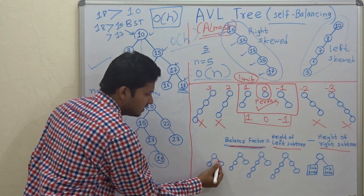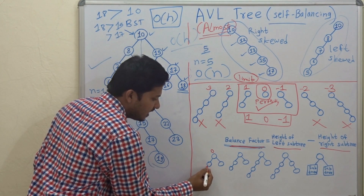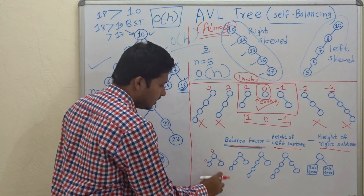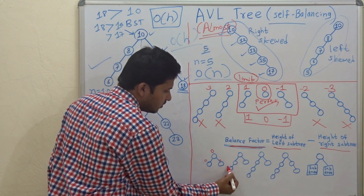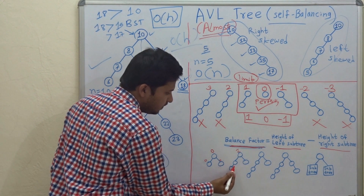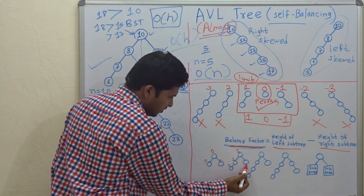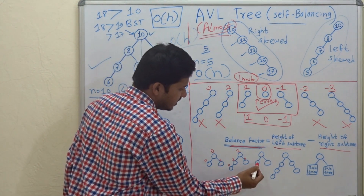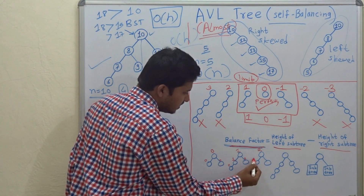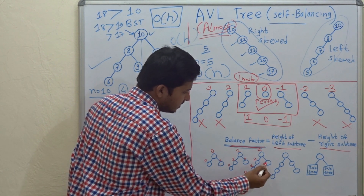Let's see more examples. For one tree, balance factors are 0, 0, 0 — this is perfectly balanced. For another tree: left subtree height 2, right 1, so root balance factor is 1; then 1 minus 0 is 1; and the leaves are 0. For a third tree: the root has balance factor 3 minus 1 = 2, and another node has 2 minus 0 = 2.